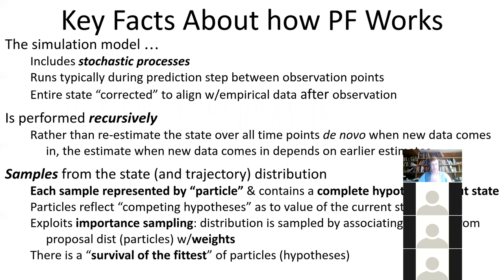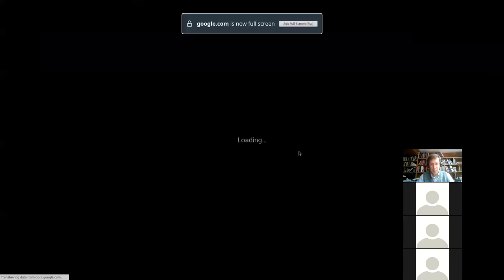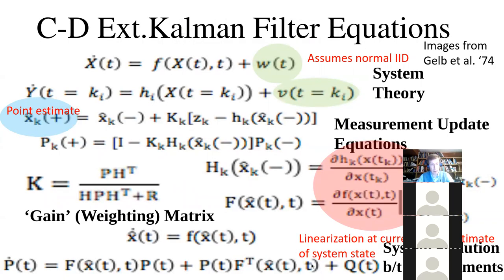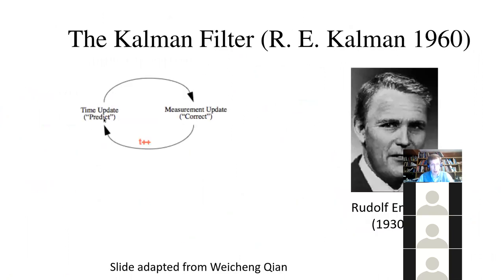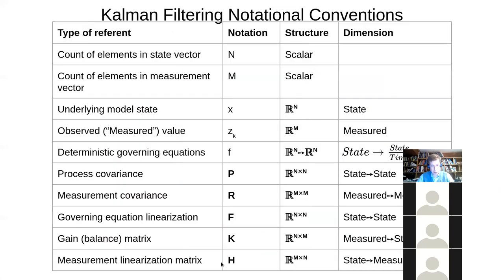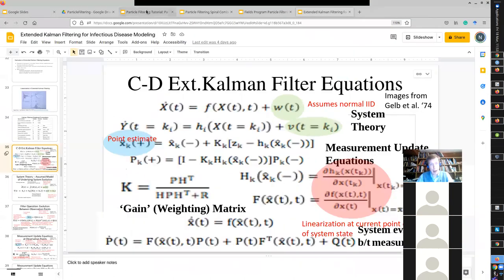As with Kalman filtering, we have two phases of operation. With Kalman filtering, we went back and forth between two phases: system evolution between measurements — time updates — and measurement updates. The time update was just simulating the system forward; the measurement update was correcting it. In particle filtering, there's a mirror of that. We're running the system — actually many versions of the system, each representing competing hypotheses as particles — running them forward in what we call the prediction step or time update step.